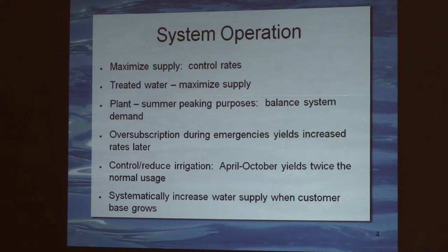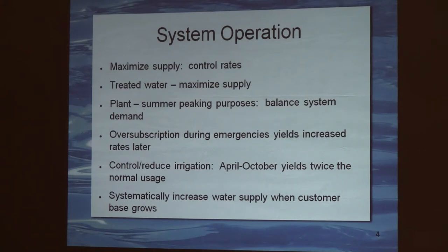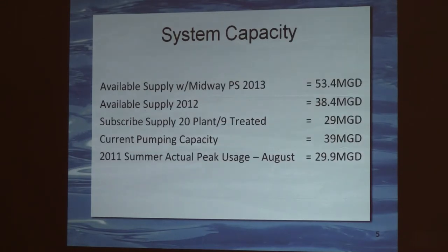Other system operations include controlling and reducing irrigation as much as possible. Historically — not only in Lewisville but many cities throughout the nation, especially in Texas — April through October is about twice the consumption of normal demand. Another system operation component is to increase the water supply only when your base demand grows, so you try to control that summer usage.